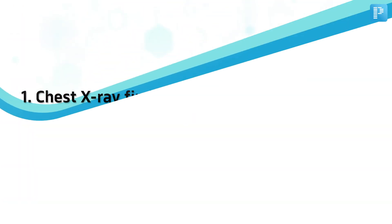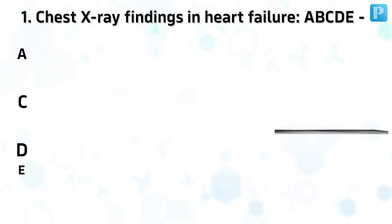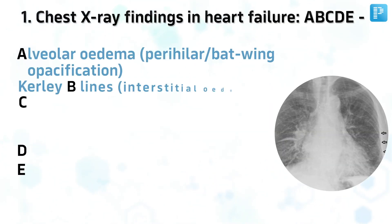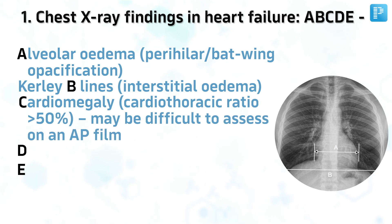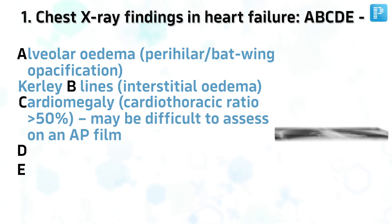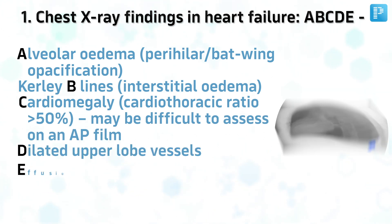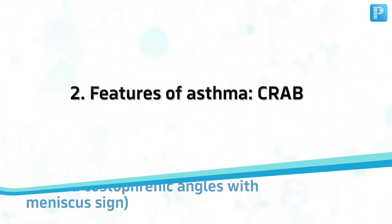Number 1. Chest X-ray Findings in Heart Failure: A, B, C, D, E. Alveolar edema, Kerley B lines, Cardiomegaly (may be difficult to assess on an AP film), Dilated upper lobe vessels, Effusions.